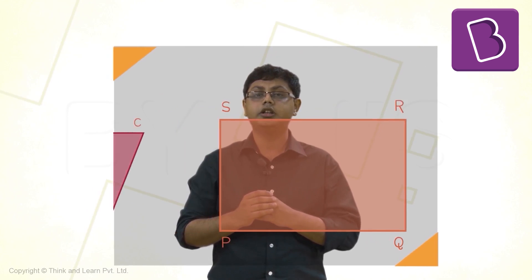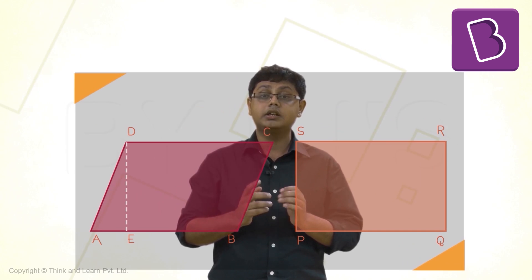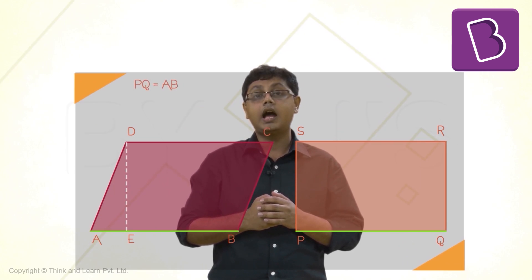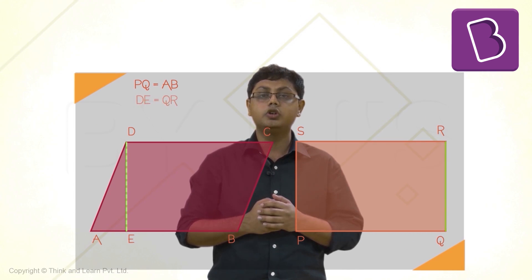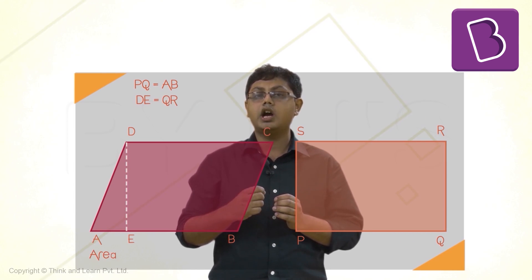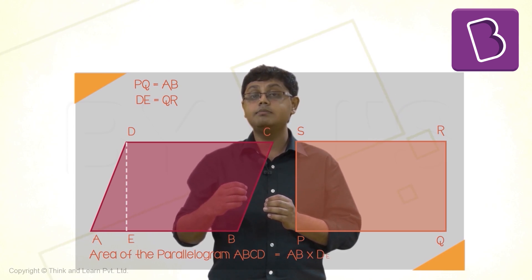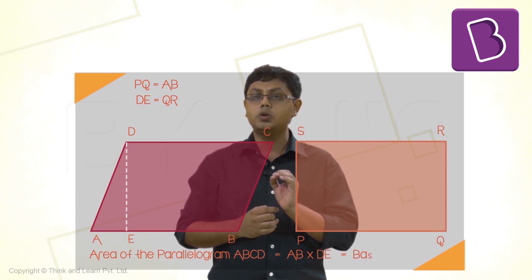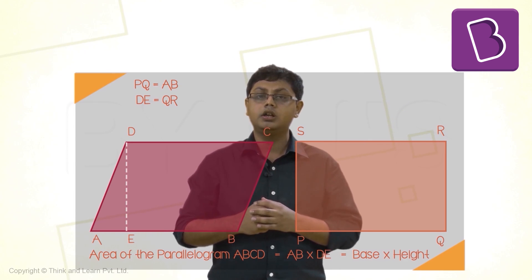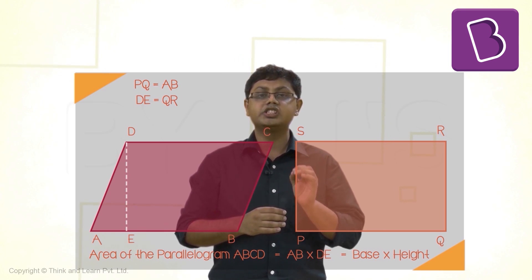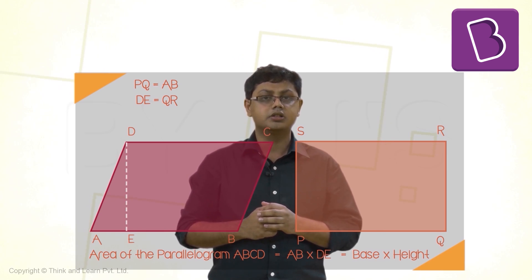Now let's compare the two figures, that is the rectangle and the parallelogram. We see that PQ is equivalent to AB and DE is equivalent to QR. So the area of the parallelogram ABCD should be equivalent to AB times DE. That's equivalent to base times height. This is true for all parallelograms including squares and rectangles. It so happens in the case of squares and rectangles that the height is equivalent to one of its sides.